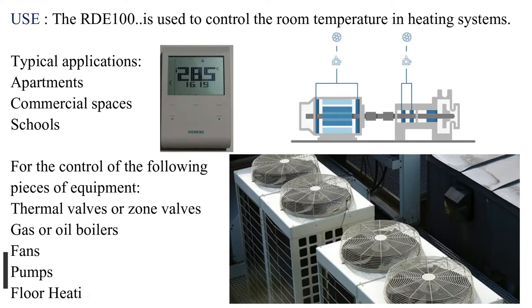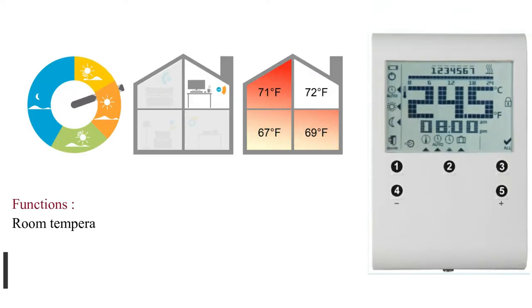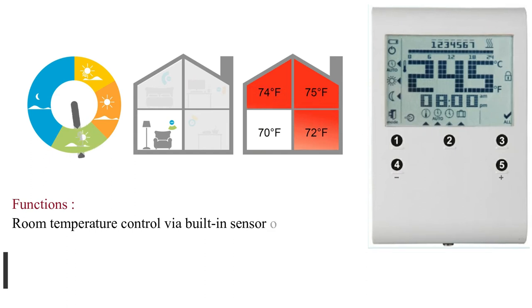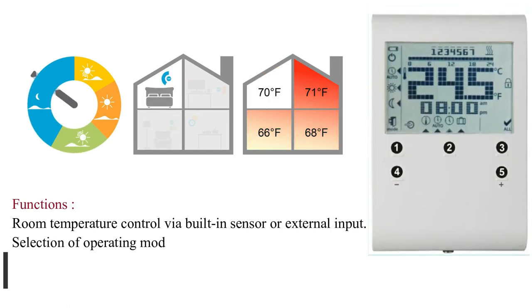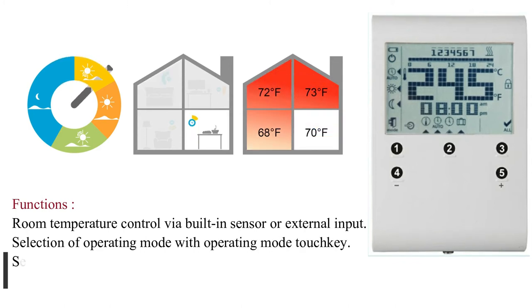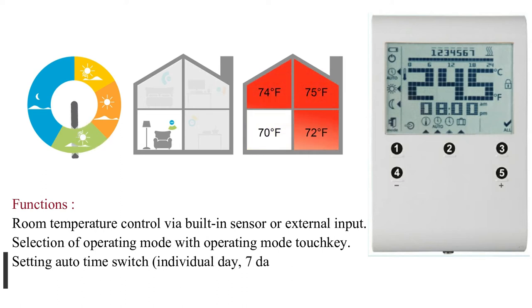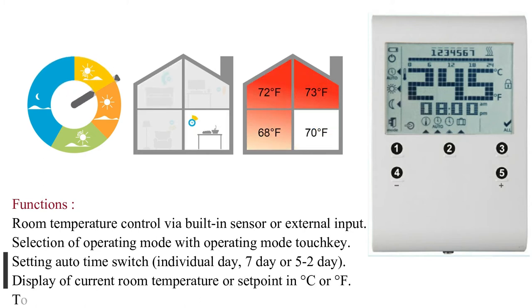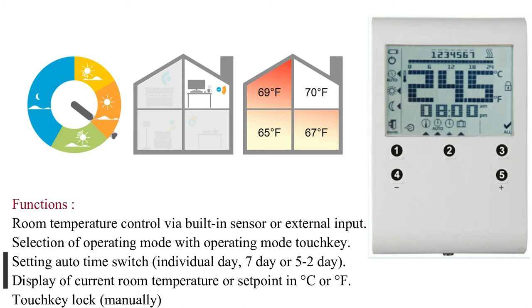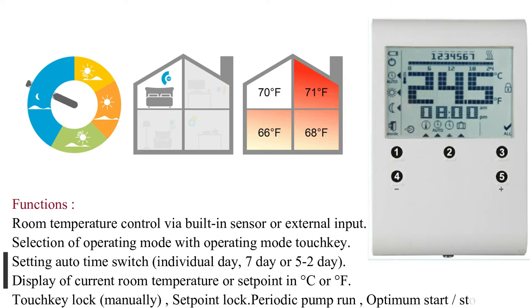Functions include room temperature control via built-in sensor or external input, selection of operating mode with operating mode touch key, setting auto time switch (individual day, 7-day or 5-2 day), display of current room temperature or setpoint in degrees Celsius or Fahrenheit, touch key lock manually, setpoint lock, periodic pump run, and optimum start/stop.